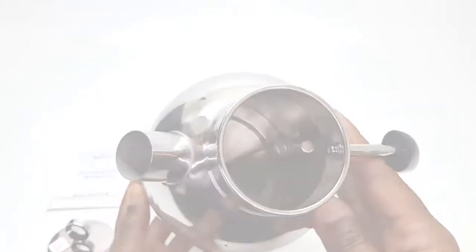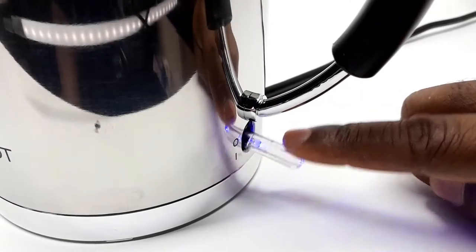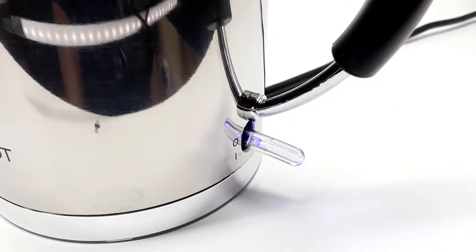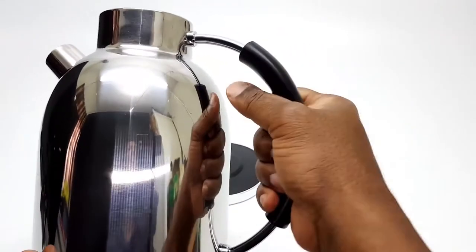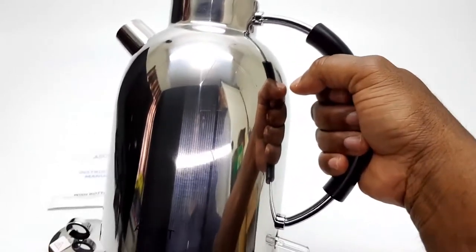On the outer part of the kettle, you have the automatic off switch which also has an LED light that illuminates when the power is on. The handle comes with a rubber coating to protect your hands from heat when handling just after boiling water.